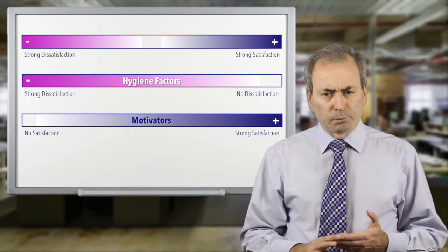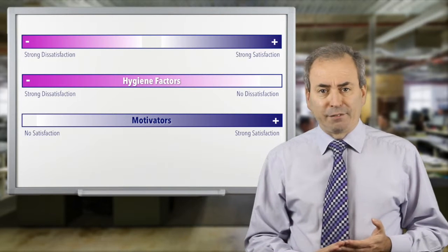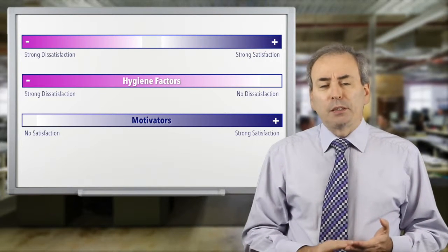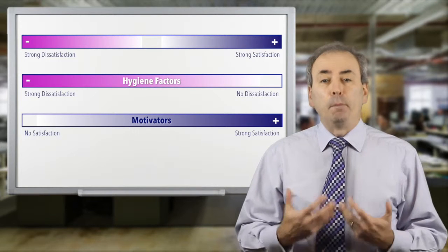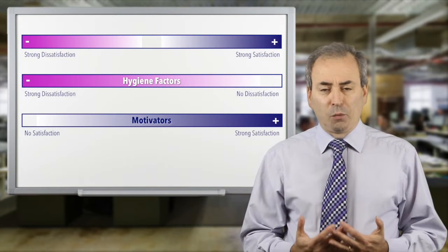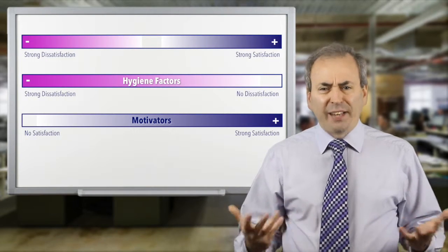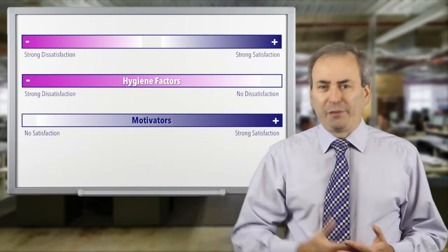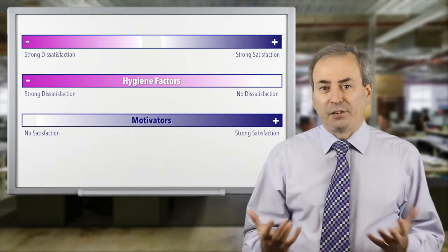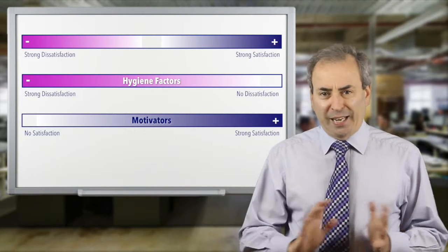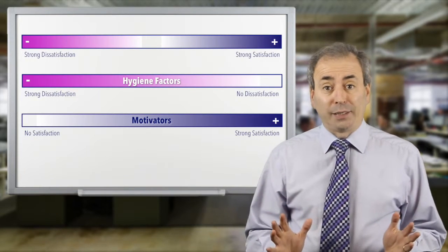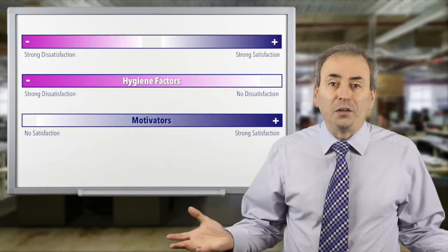So what are some of these hygiene factors? Well, the principle among them are things like basic good conditions at the workplace. Quite literally hygiene is one of them. If people go into the washrooms or the kitchen areas and they're filthy and disgusting, then people are going to hate working at their workplace, for the simple reason that why wouldn't you?